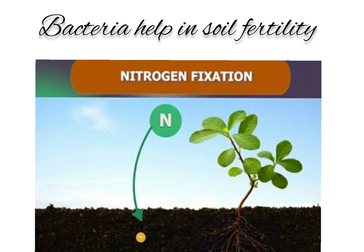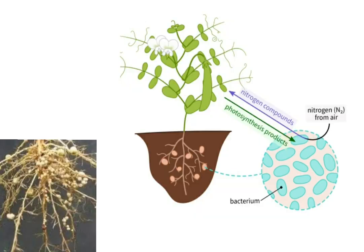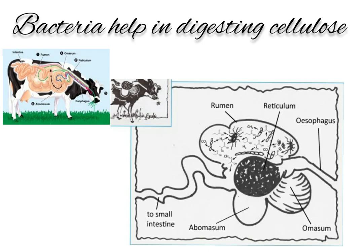Some bacteria help in fixing atmospheric nitrogen by converting it into nitrates, which can be used by plants. These bacteria live in the roots of leguminous plants such as peas and beans. The digestive tract of herbivorous animals also contains bacteria that break down cellulose of plant cells into simple sugars so it can be absorbed into the blood. Animals can digest cellulose, but human beings cannot.